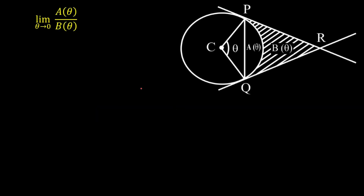Our objective is to calculate the limit as theta tends to zero of A(θ) upon B(θ). A(θ) is the area bounded by the arc and chord PQ, and B(θ) is the shaded region bounded by the tangents and arc. This question is not difficult once I find these two functions — A(θ) and B(θ) — as functions of theta. The limit will then be easy to calculate. I'll calculate both quantities through a diagram.